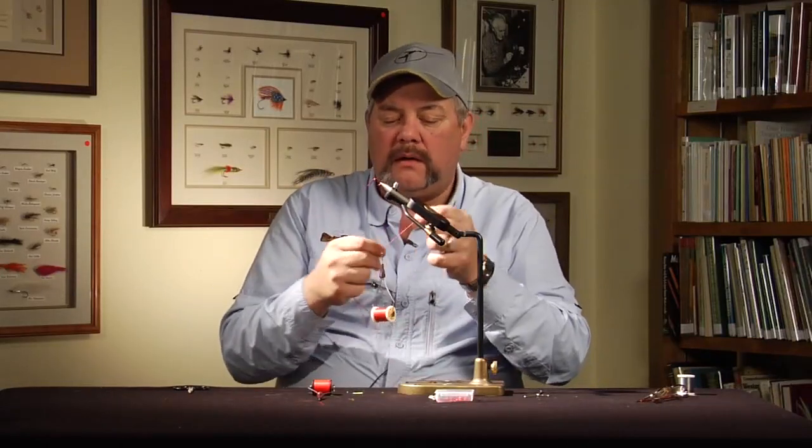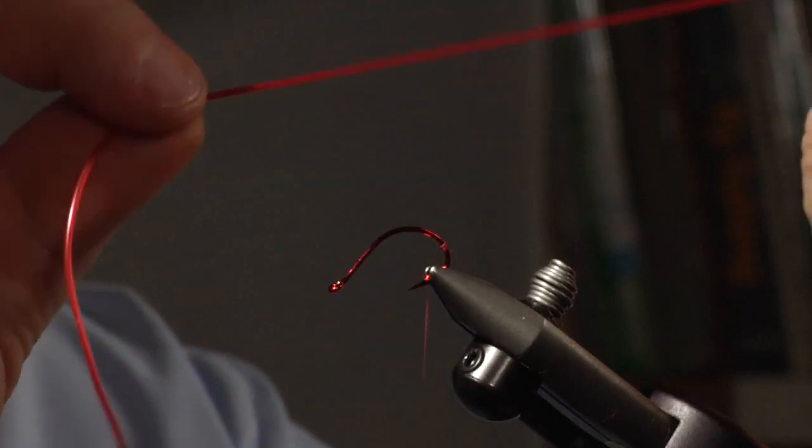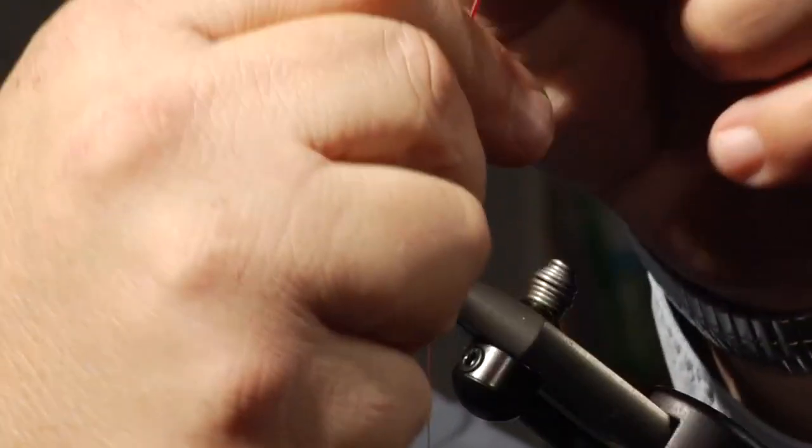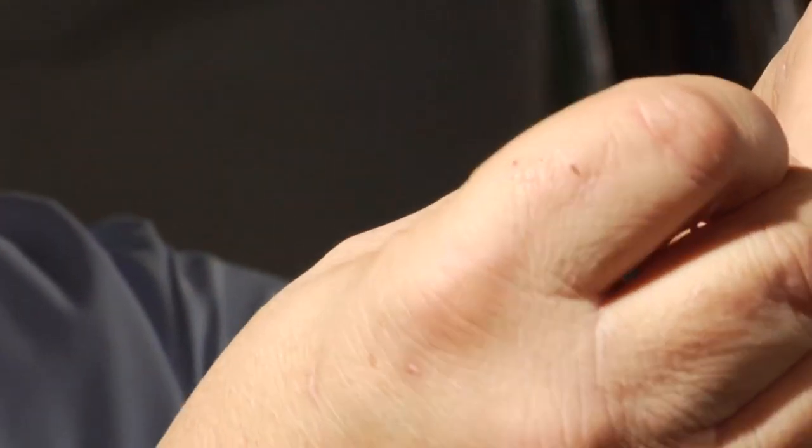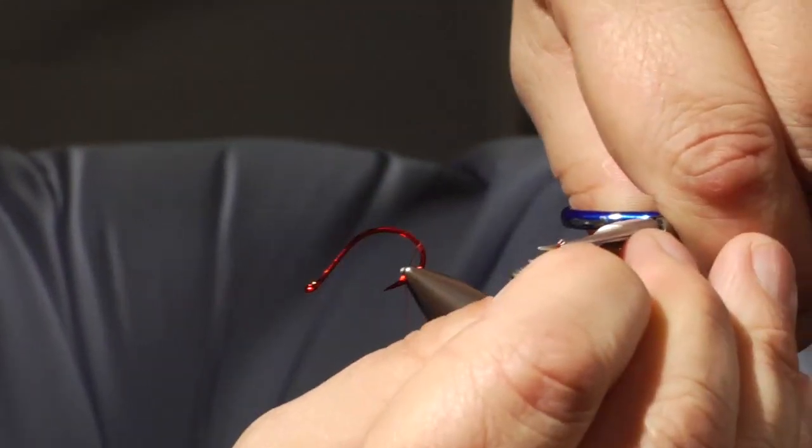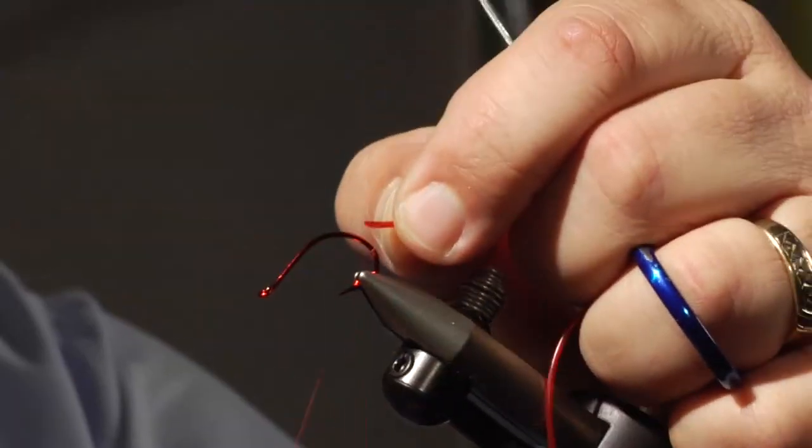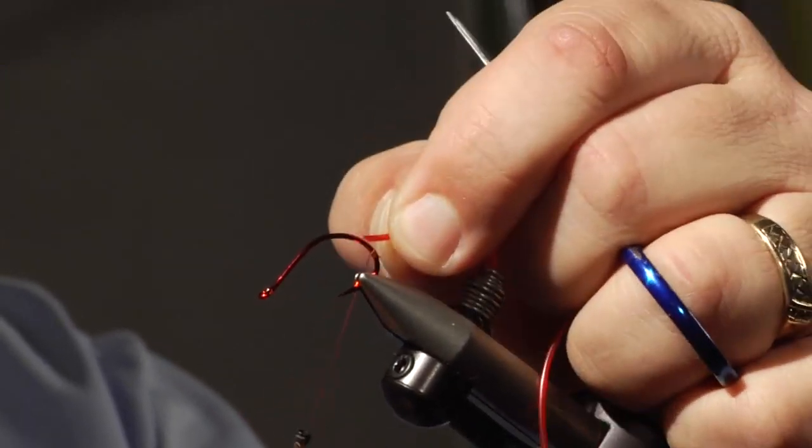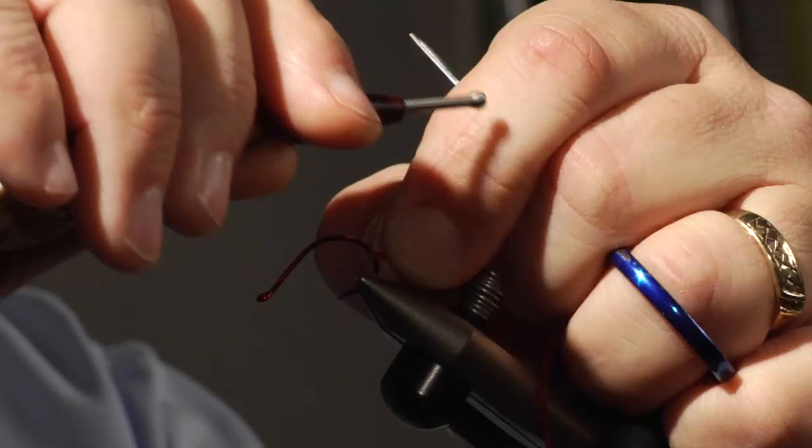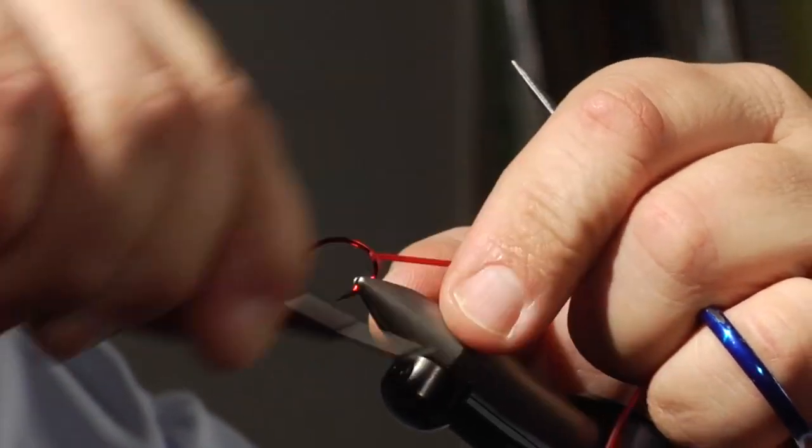Then you're going to take a strip of larvalace, which is very stretchy and hollow. It's what they call their body material. I like to angle cut this just a little bit because it allows me to tie it in and it doesn't build up. I lay that angle right down on the back of the hook and come up and just wrap that down good and tight.